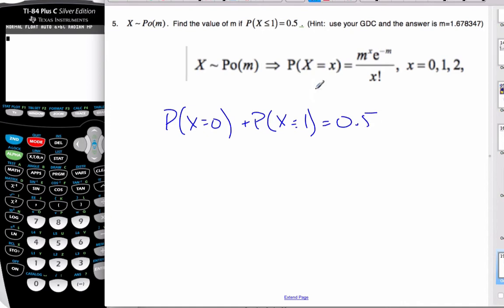Well, we know that these probabilities are such, so I can go m to the 0, using this formula, e to the minus m over 0 factorial plus m to the 1 e to the minus m over 1 factorial is equal to 0.5.